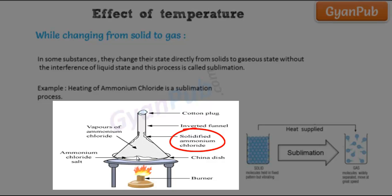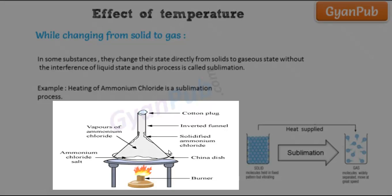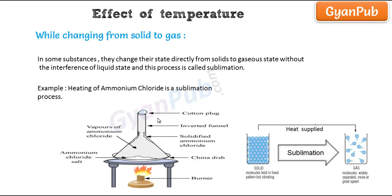Here, the solid is changed to gas and the gas is again changed to solid, and we get the ammonium chloride salt as solidified again. This process is called sublimation, where the liquid state is not involved while changing the state from solid to gaseous state. Heating of ammonium chloride is a sublimation process.